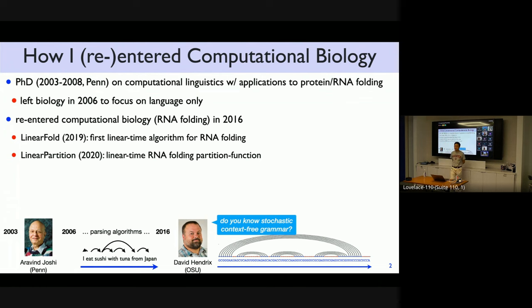After I moved to Oregon State, there was a biology colleague, Dave Hendricks, who asked me a random question. He said, do you know this thing called stochastic context-free grammars, which can be used to model RNA structures? I was like, yeah, that's exactly what my advisor wanted me to work on for my thesis, except that I just gave it up. But the time he asked me this question, I had already worked on parsing and translation for the past 10 years. And I suddenly realized all these algorithms from language can be applied to RNA and protein very easily because they're just languages.